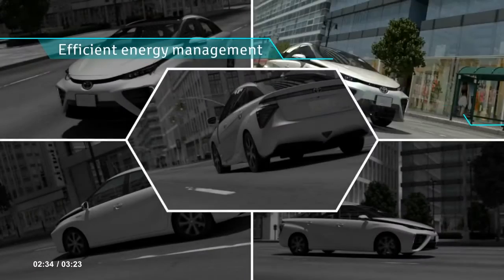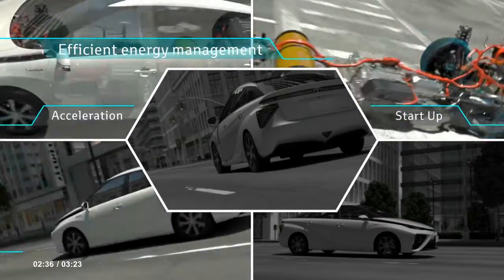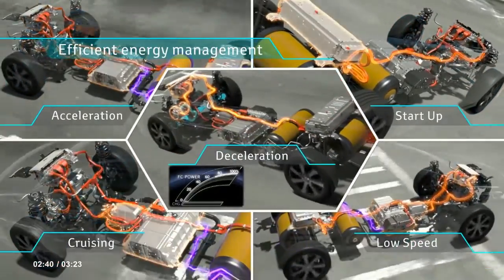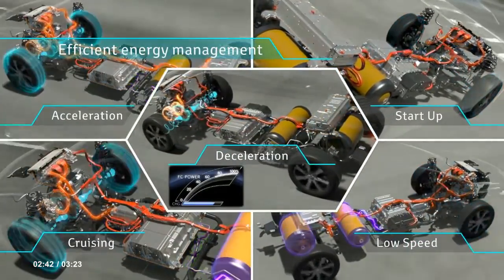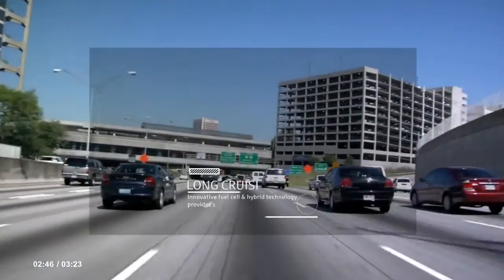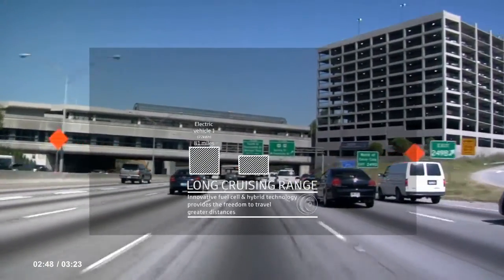FCV controls the electricity created by the fuel cell using technology developed from the hybrid vehicle. The motor works as a generator, gathering energy when the car speed is low. This accumulated energy is stored in the battery to support the fuel cell when accelerating.